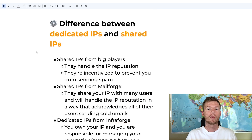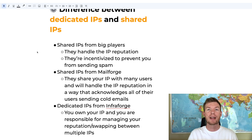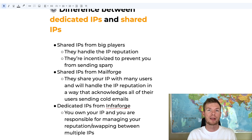We first need to understand what a dedicated IP and a shared IP are, and which tools have what. All major email service providers, such as Outlook and Google, use shared IPs — they have thousands, tens of thousands, or even millions of IPs, and they manage reputation across them. Because those IPs are shared, other people are using the same IPs, so they're incentivized to prevent spam to keep average reputation very high.